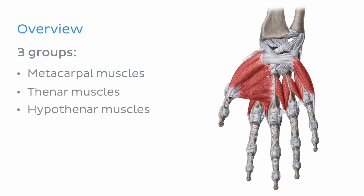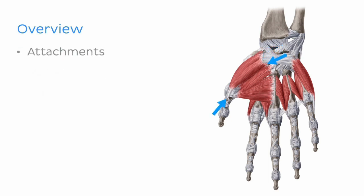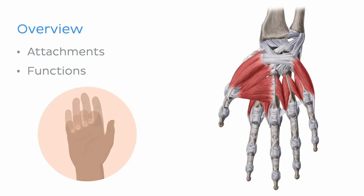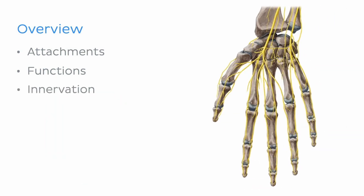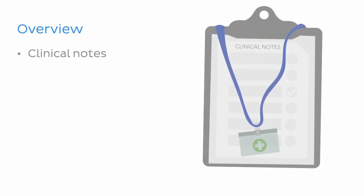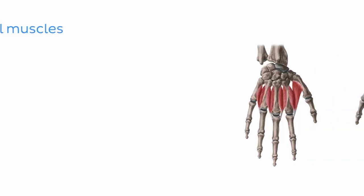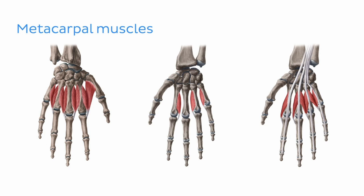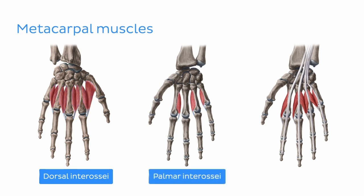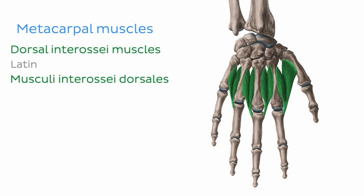We'll take a look at each of the muscles which make up these groups and explore their attachments, functions, and innervation. We'll then finish off today's tutorial with a quick look at some clinical notes on the muscles of the hand to help consolidate our knowledge. Let's begin with the muscles associated with the metacarpal bones. The metacarpal muscles are located between the metacarpal bones of the hand. They are made up of three groups of muscles: the dorsal interossei, the palmar interossei, and the lumbricals. Let's begin by taking a look at the dorsal interossei.